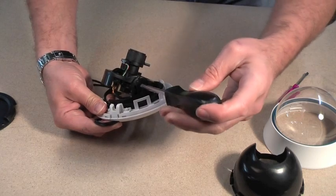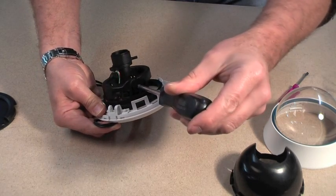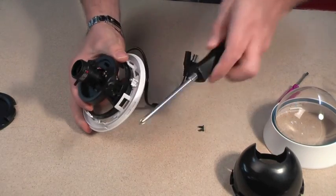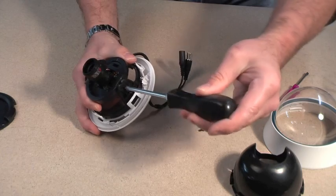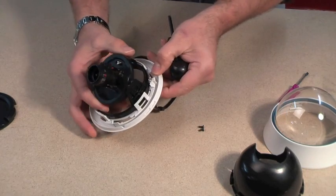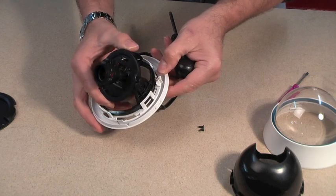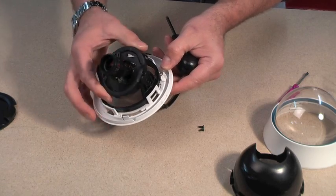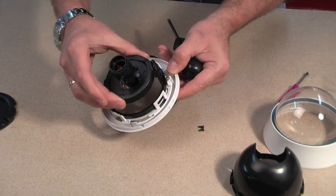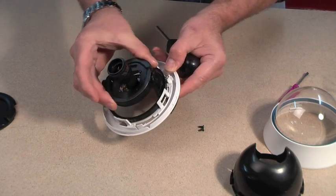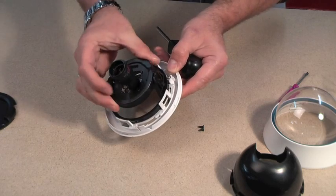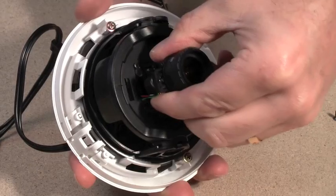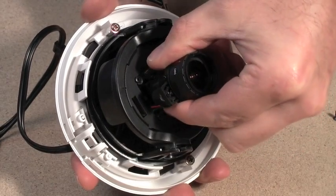Now you have to loosen off the screws which hold the camera in position, the locking screws. Adjust them both sides, just loosen them slightly. And you can now put the camera in position. You can tilt, you can rotate, and very carefully, you can also twist the camera around for the third axis of movement.